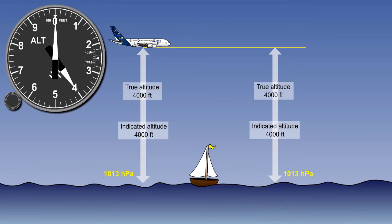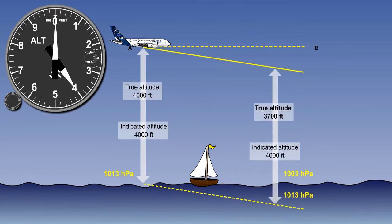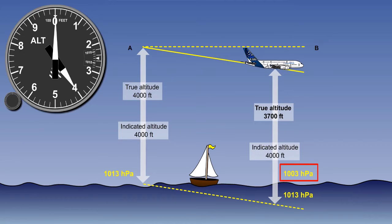Let's see how barometric error can have a substantial effect on our actual altitude. In our illustration, an aircraft with 1013 set on the pressure altimeter is flying from A to B at a constant indicated altitude of 4000 feet. We can see that when the aircraft arrives at B the indicated altitude and the true altitude are both 4000 feet. Now let's see the effect of barometric error if we fly at a constant indicated altitude of 4000 feet from A to B while the atmospheric pressure is changing. The aircraft pressure altimeter is still set to a mean sea level pressure of 1013 hectopascals, but as we fly from A to B the atmospheric pressure at mean sea level drops to 1003 hectopascals.